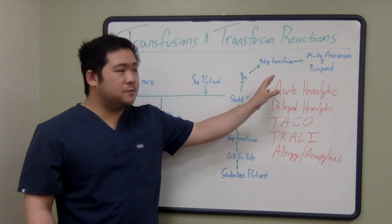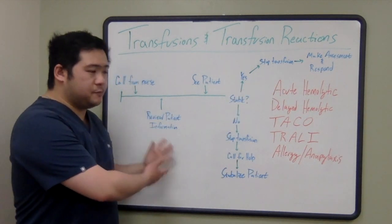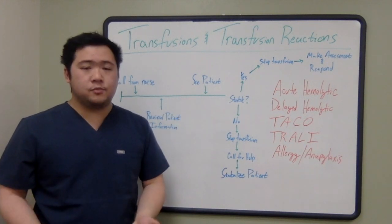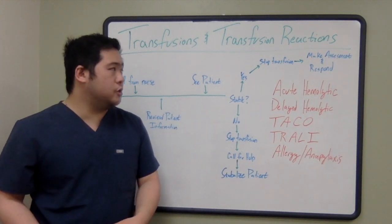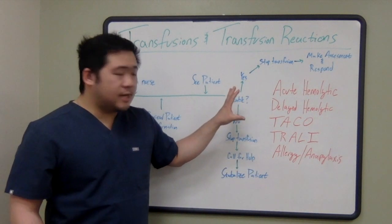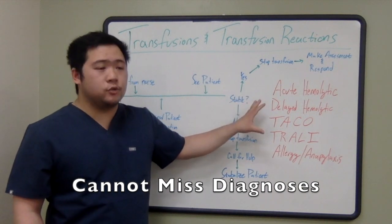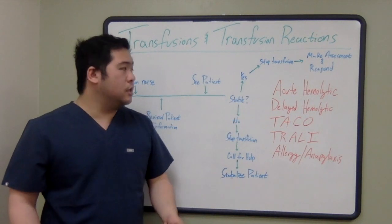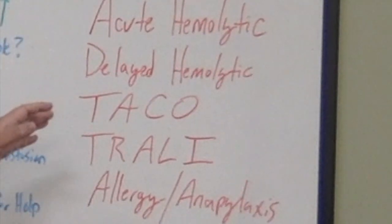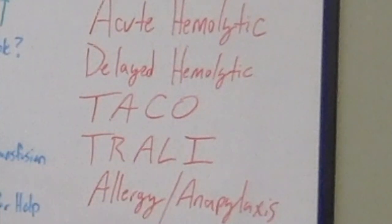When I start thinking about my assessment, taking all the information I gained by reviewing the patient information, seeing the patient, talking to and examining them, and talking to the nurses caring for the patient — when I'm making that assessment, I first think about the things that I can't miss: the things that are very toxic and potentially dangerous to the patient that could cause death. I think about acute hemolytic reactions, delayed hemolytic reactions, TACO and TRALI, and I'll also think about anaphylaxis in these patients.